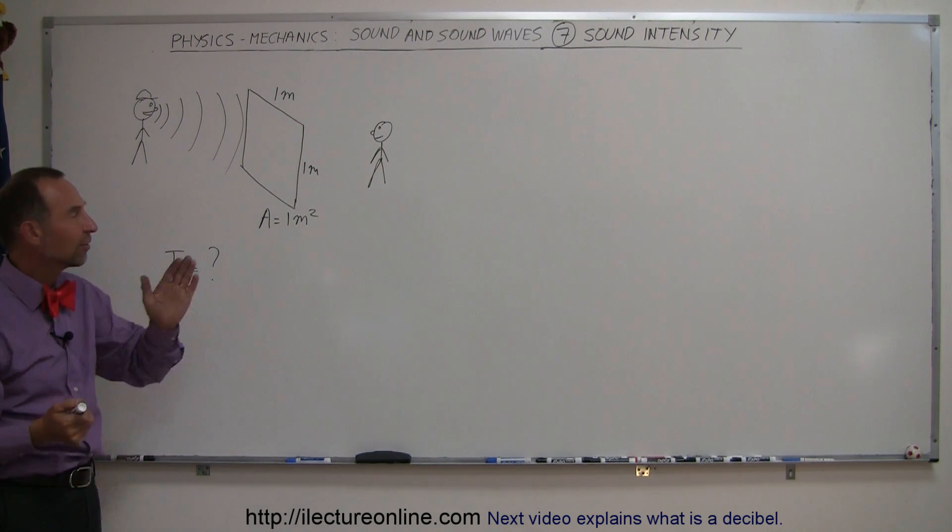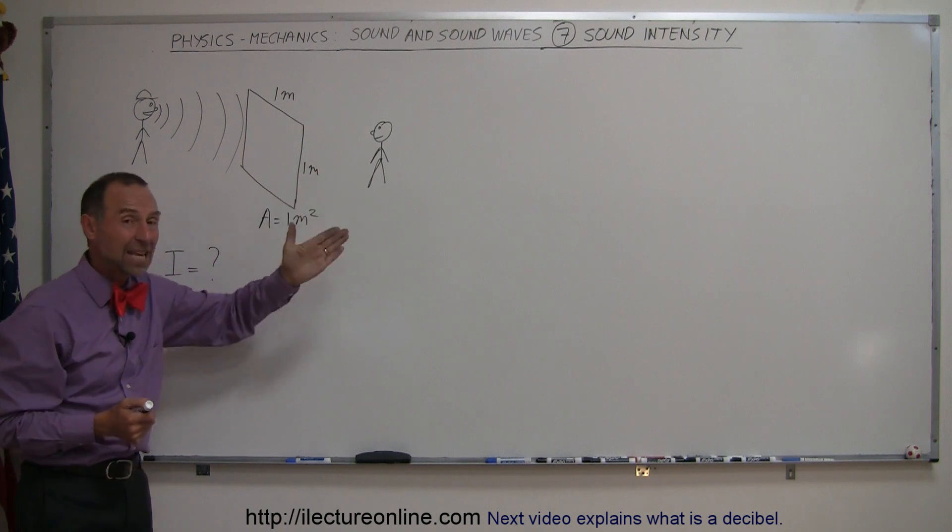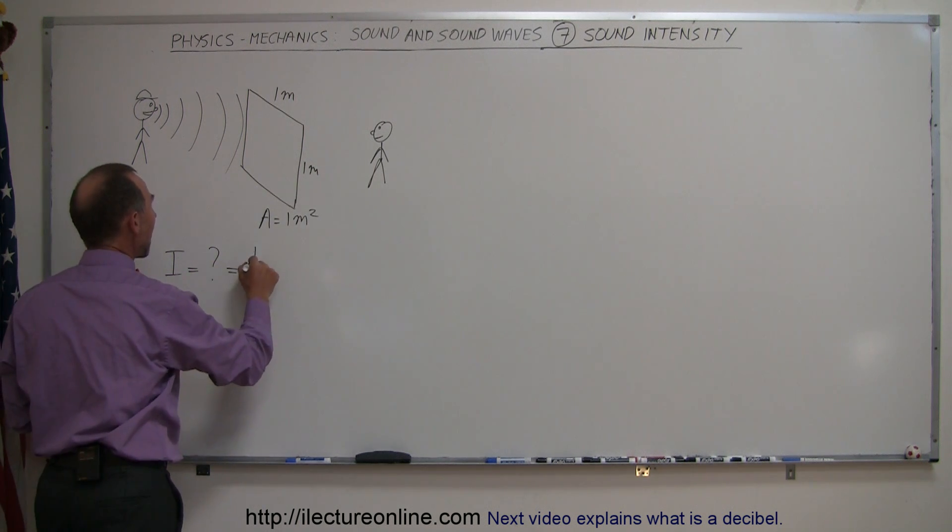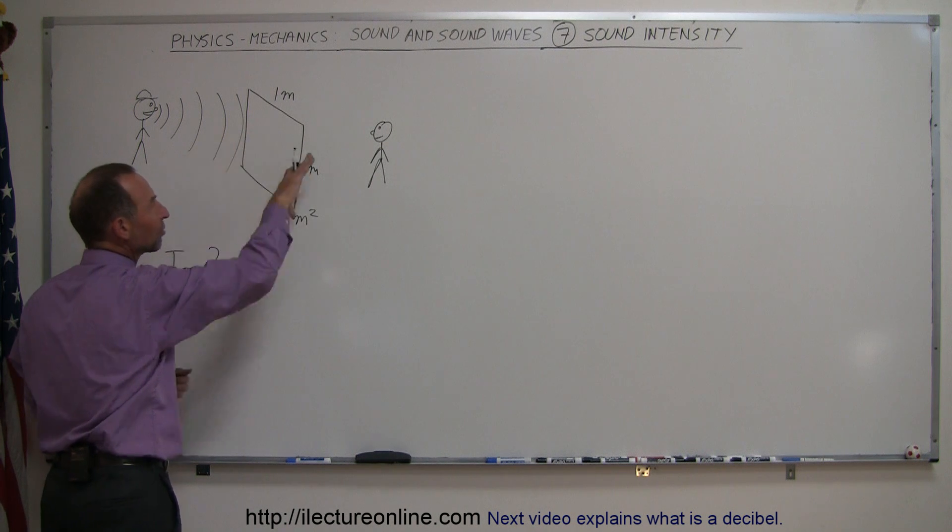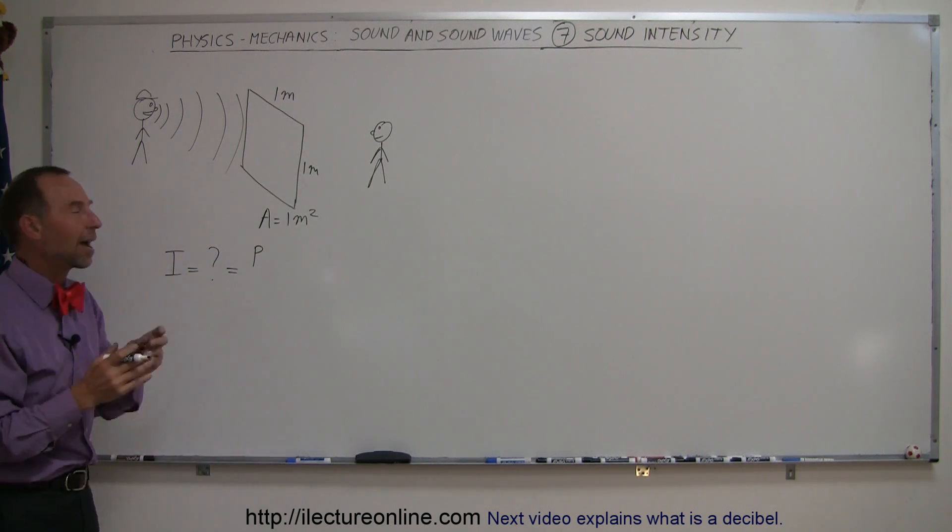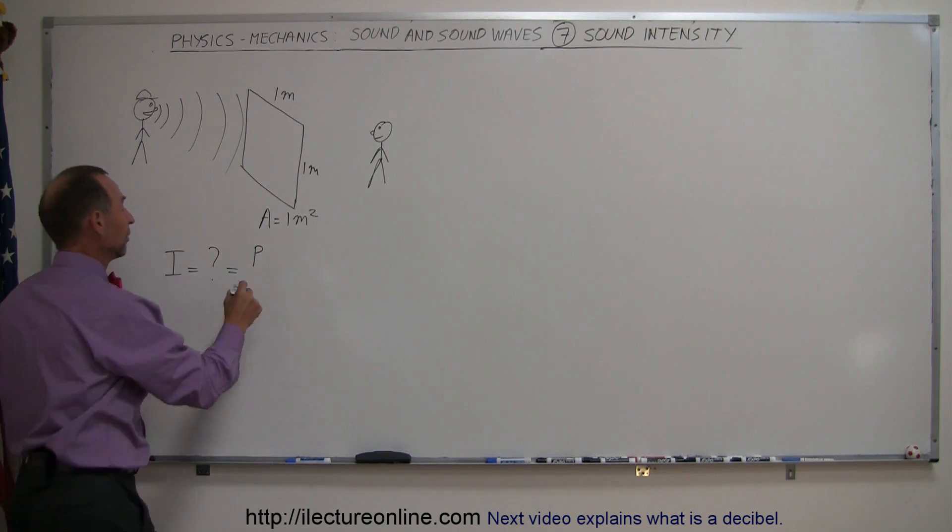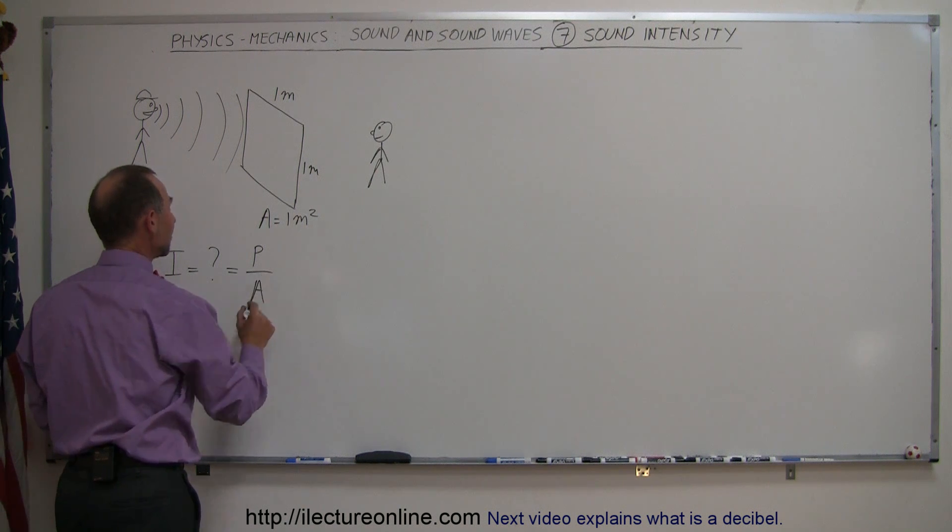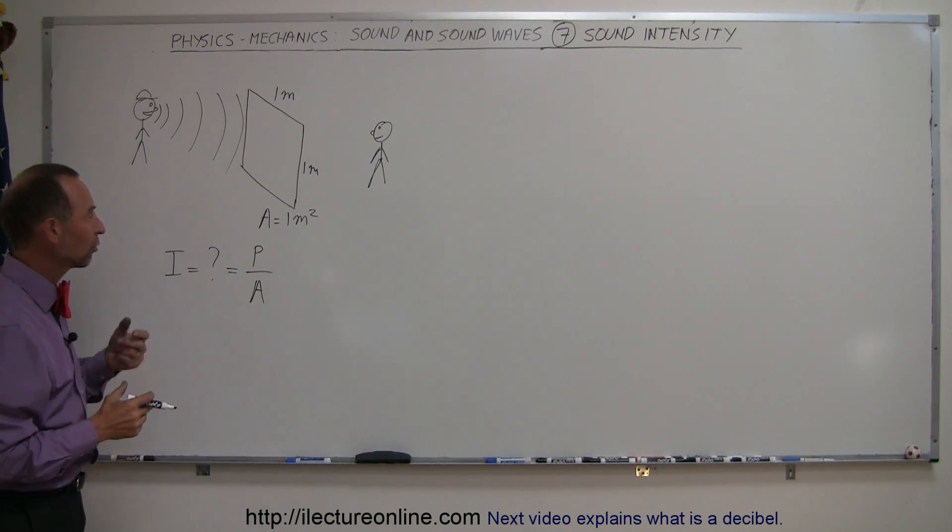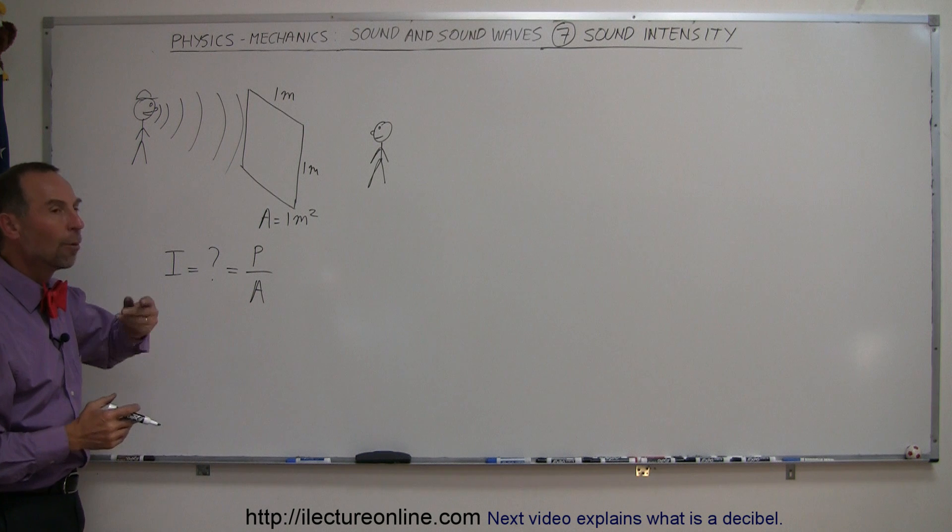Well, the intensity of the sound that the person on the other side hears is defined by the power of the sound that makes it through. How much energy per unit time makes it through the window? Because we have to divide that by the unit area. So it's power going through the window per unit area.